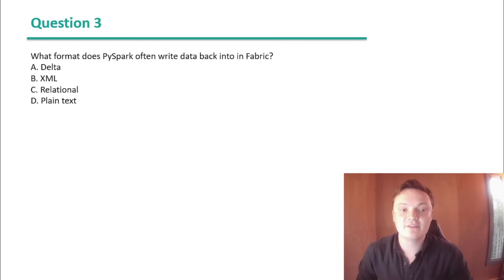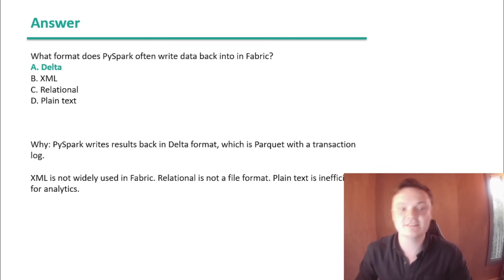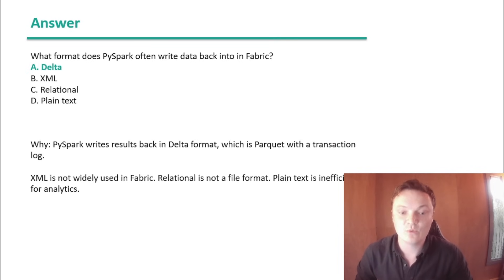Question 3: What format does PySpark often write data back into Fabric? A. Delta. B. XML. C. Relational. Or D. Plain text. The answer is Delta. PySpark writes results back in Delta format, which is parquet with a transaction log. XML is not widely used in Fabric, relational is not a file format, and plain text is inefficient for analytics.